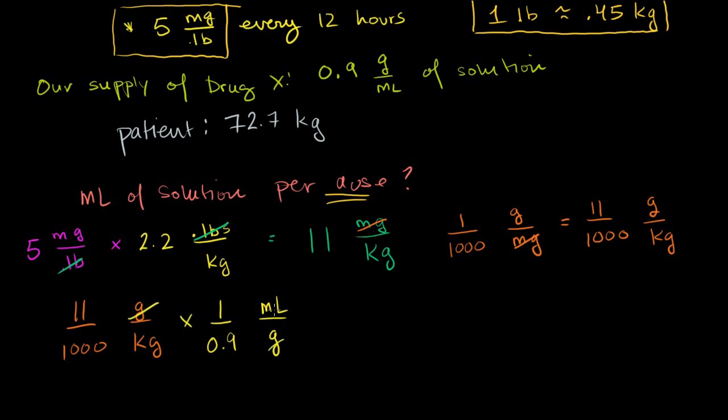So our grams cancel out. We have milliliters per kilogram. And then we multiply it out. 11 over 1,000 times 1 over 0.9. So I'll just keep, let me just write it like this. So this is going to be 11 over 1,000 times 0.9 milliliters of our solution per kilogram. So we've gotten this far. So this is per kilogram of patient body weight.